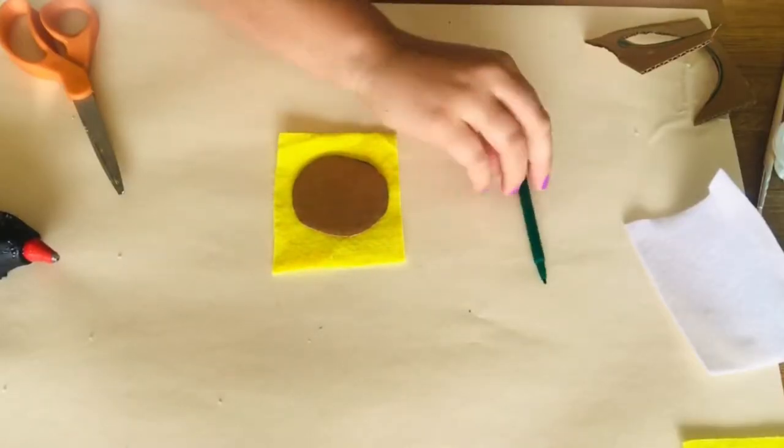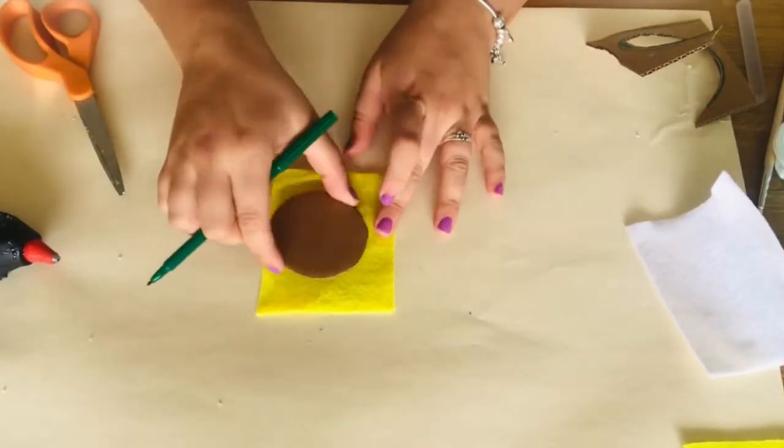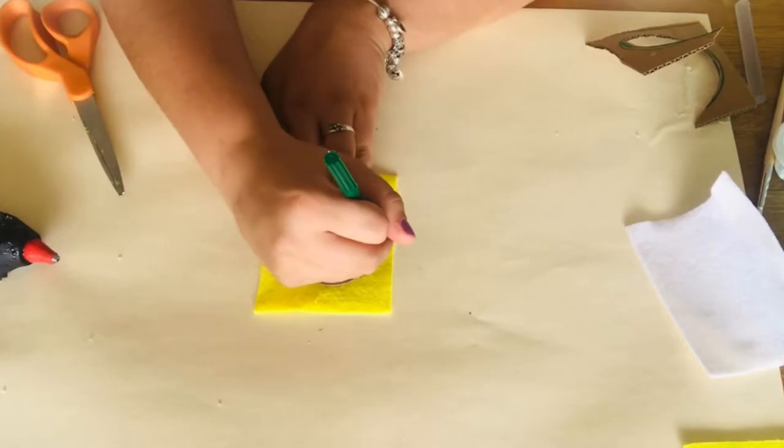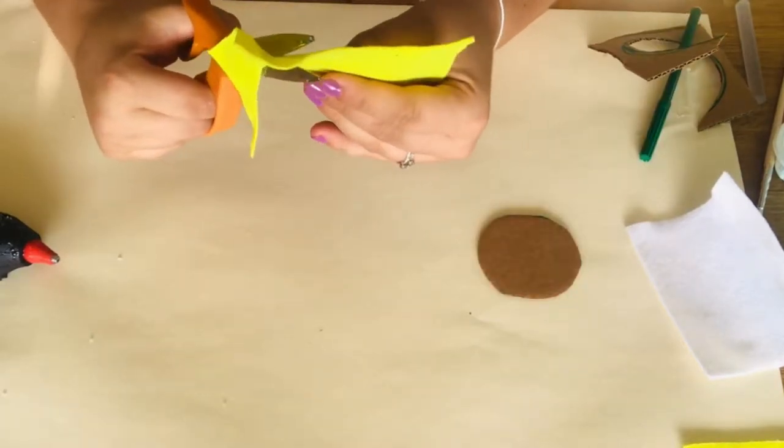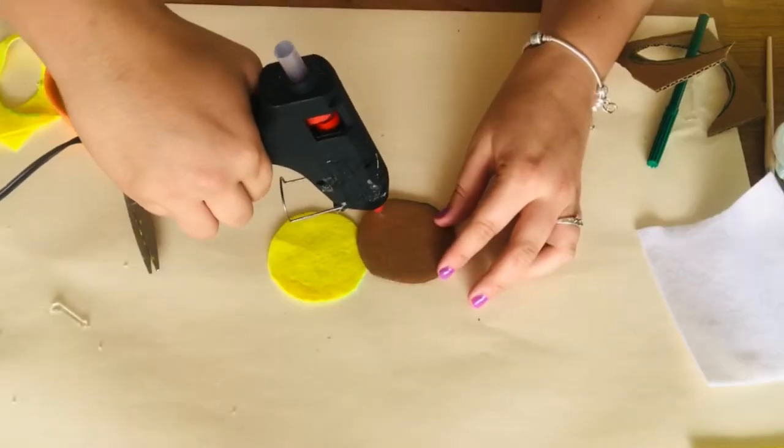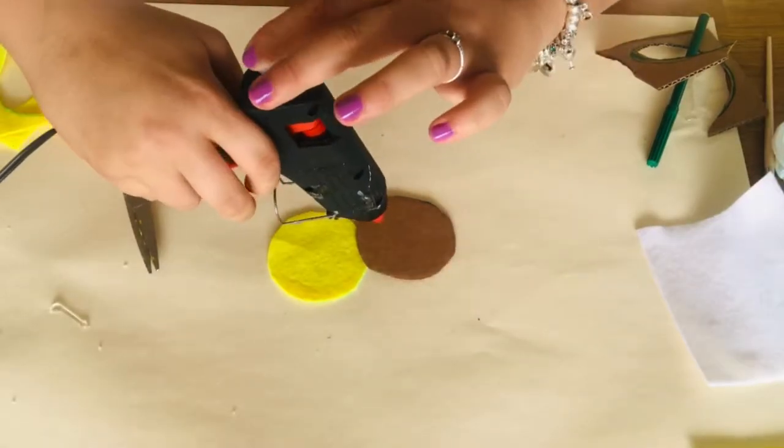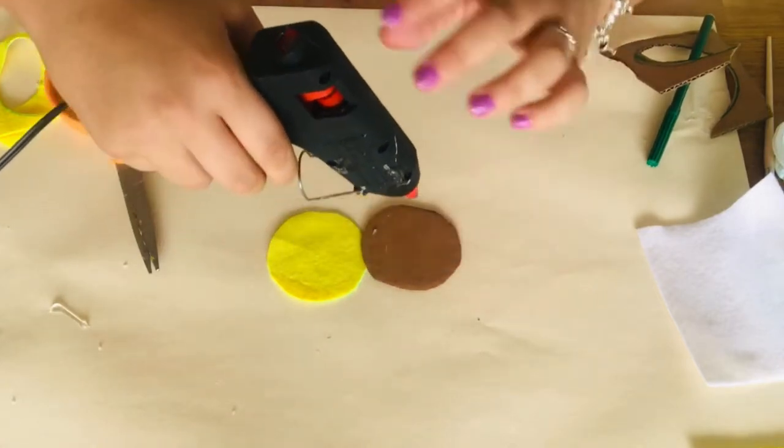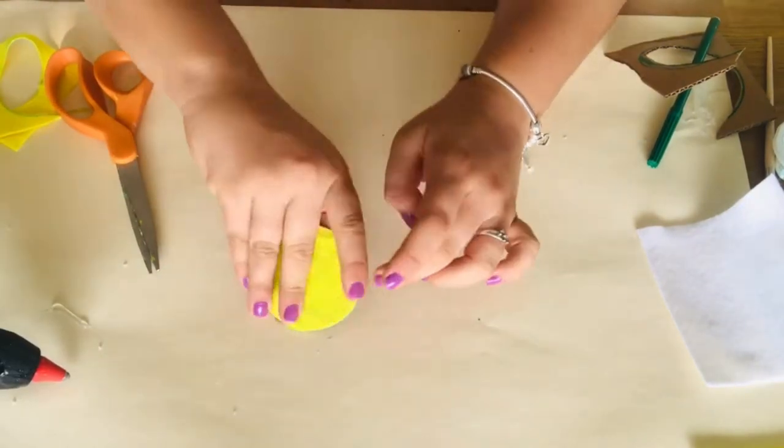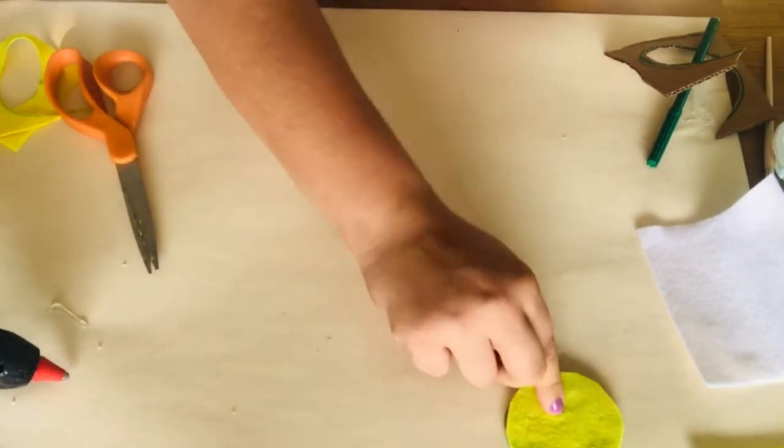Once your cardboard is cut out, place it on top of your first piece of yellow felt and then trace it around the yellow felt. And then you're going to cut out your yellow felt. And then hot glue on your yellow felt to your cardboard. This is going to become the base of our coaster. Press it on and then set it aside.